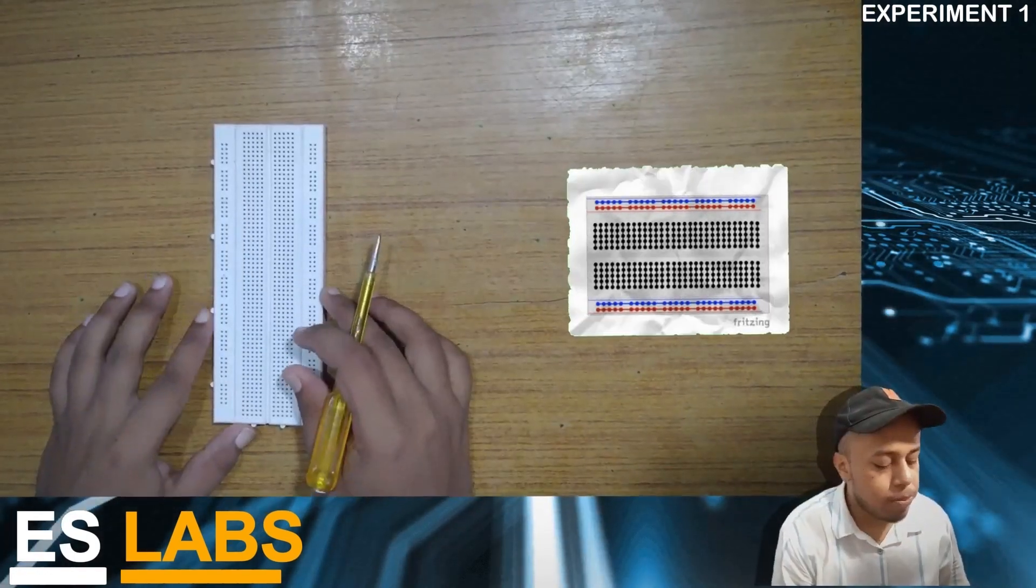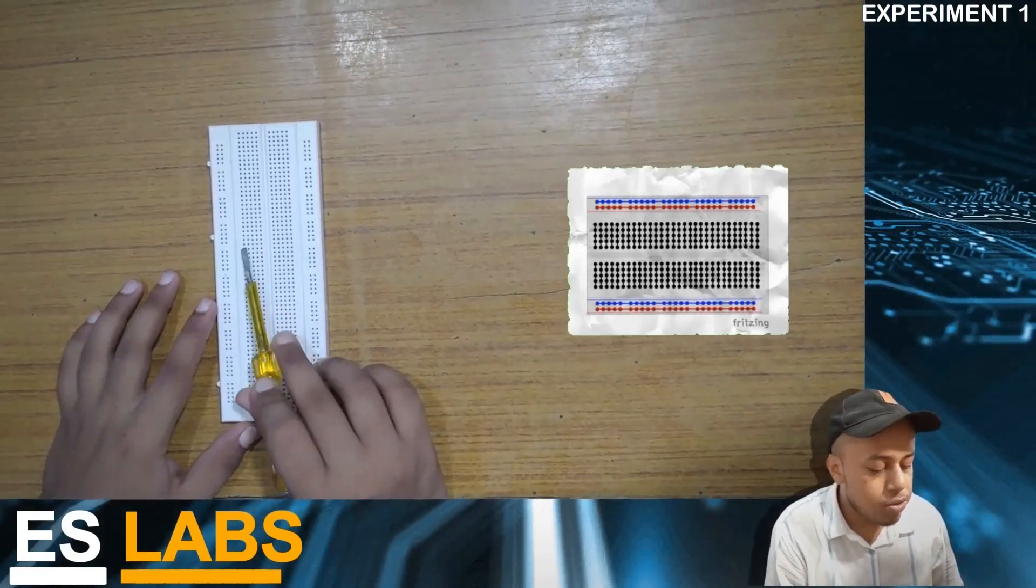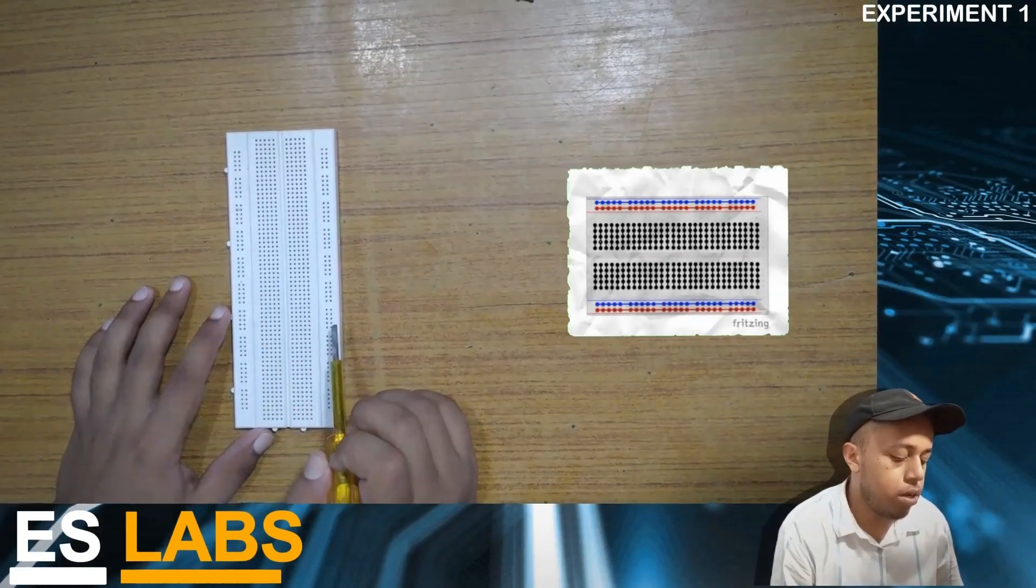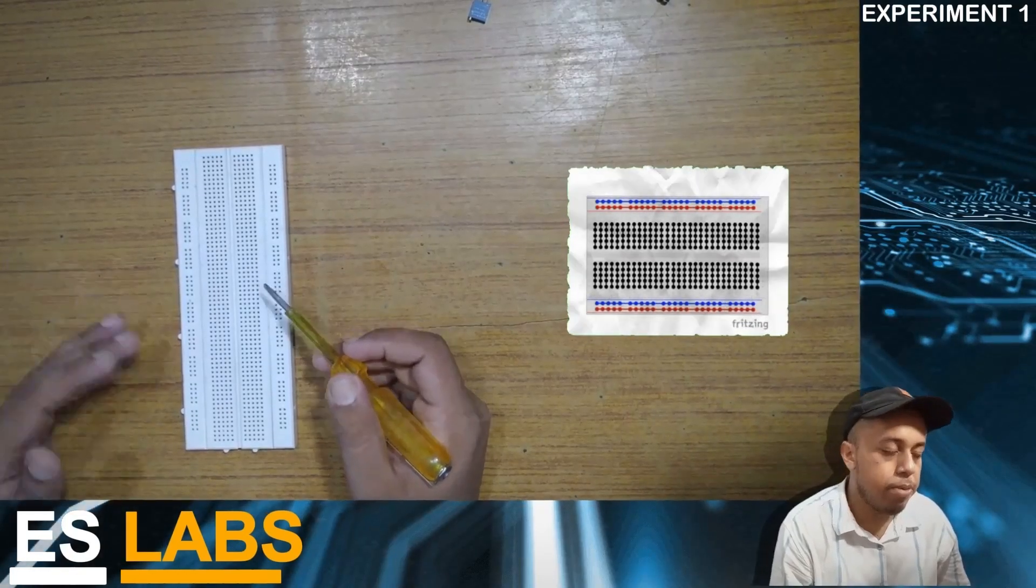So now the next component is breadboard. Breadboard is an area of connection in which horizontal pins are shorted in the fashion shown here. And similarly vertical pins are also shorted and not shorted between each other.